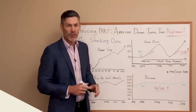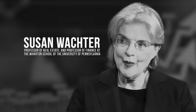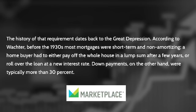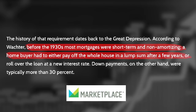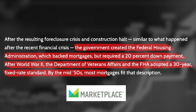Let's go right to the internet. This is from Marketplace.org, where Susan Wachter, a professor of real estate and finance at University of Pennsylvania's Wharton School, describes the history of down payments for housing in the United States. According to Wachter, before the 1930s, most mortgages were short-term and non-amortizing. A homebuyer had to either pay off the whole house in a lump sum after a few years or roll over the loan at a new rate of interest. Down payments were typically more than 30%. Then the government created the Federal Housing Administration, or FHA, which backed mortgages but required a 20% down payment. After World War II, the Department of Veterans Affairs and the FHA adopted a 30-year fixed-rate standard. By the mid-1950s, most mortgages fit that description.